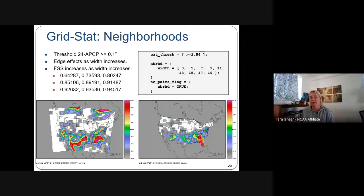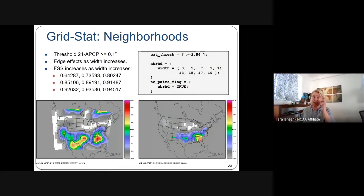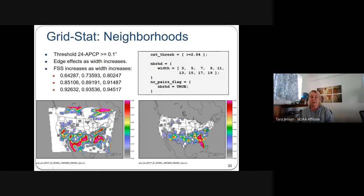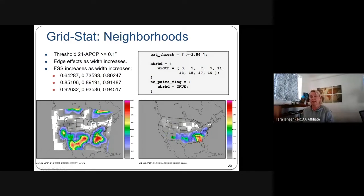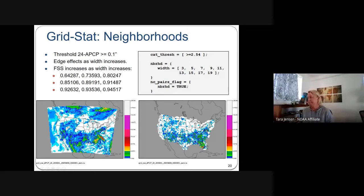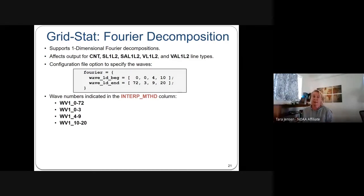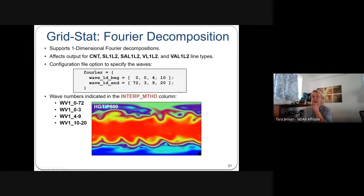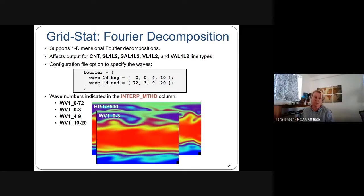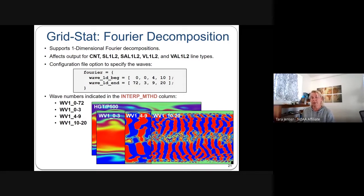Here are examples of what the Fraction Skill Score (the statistic typically computed for neighborhood methods) looks like and how it varies with different neighborhood sizes. For Fourier decomposition, in the fourier dictionary of the config file you specify which wave numbers to include: the full field, wave numbers 0–3, 4–9, 10–20, and so forth. Once the field is decomposed into different wave numbers, you can compute statistics for those particular components.